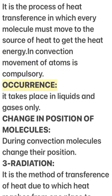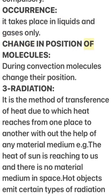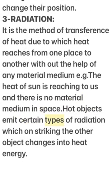2) Convection: It is the process of heat transference in which every molecule must move to the source of heat to get the heat energy; movement of atoms is compulsory. Occurrence: It takes place in liquids and gases only. During convection, molecules change their position. 3) Radiation: It is the method of transference of heat by which heat reaches from one place to another without the help of any material medium — e.g., the heat of the sun reaches us and there is no material medium in space. Hot objects emit certain types of radiation which, on striking another object, change into heat energy.